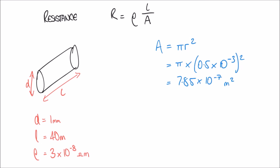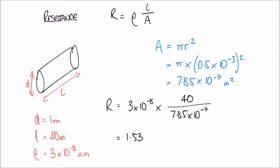Knowing the area, we return to our formula for resistance: R equals rho times L over A. Rho is 3 times 10 to the minus 8, multiplied by the fraction 40 on top over 7.85 times 10 to the minus 7 on the bottom. Calculating that gives 1.53 ohms — that is the resistance.